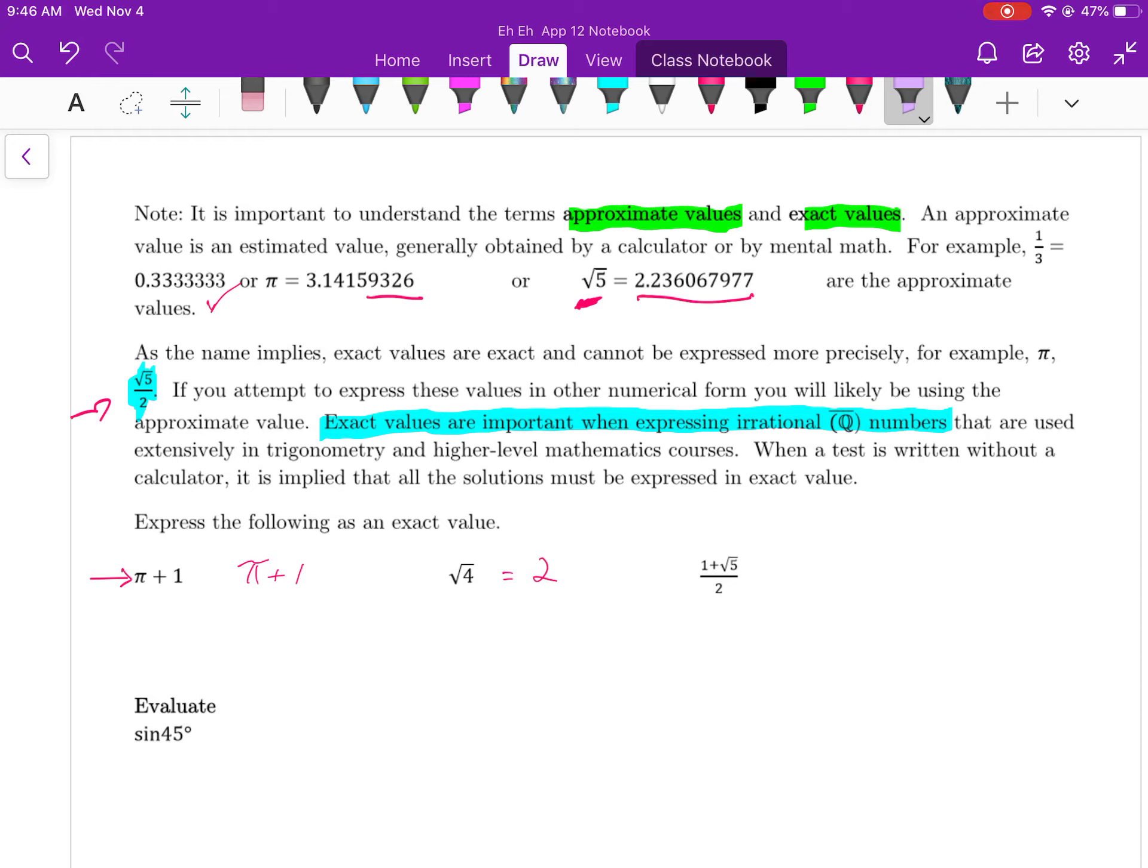1 plus the root of 5 over 2. Notice how the root of 5 is an irrational number. So a rational number plus an irrational number divided by another rational number, the result will still be irrational. So therefore, this is exact value. It is already expressed in exact value.